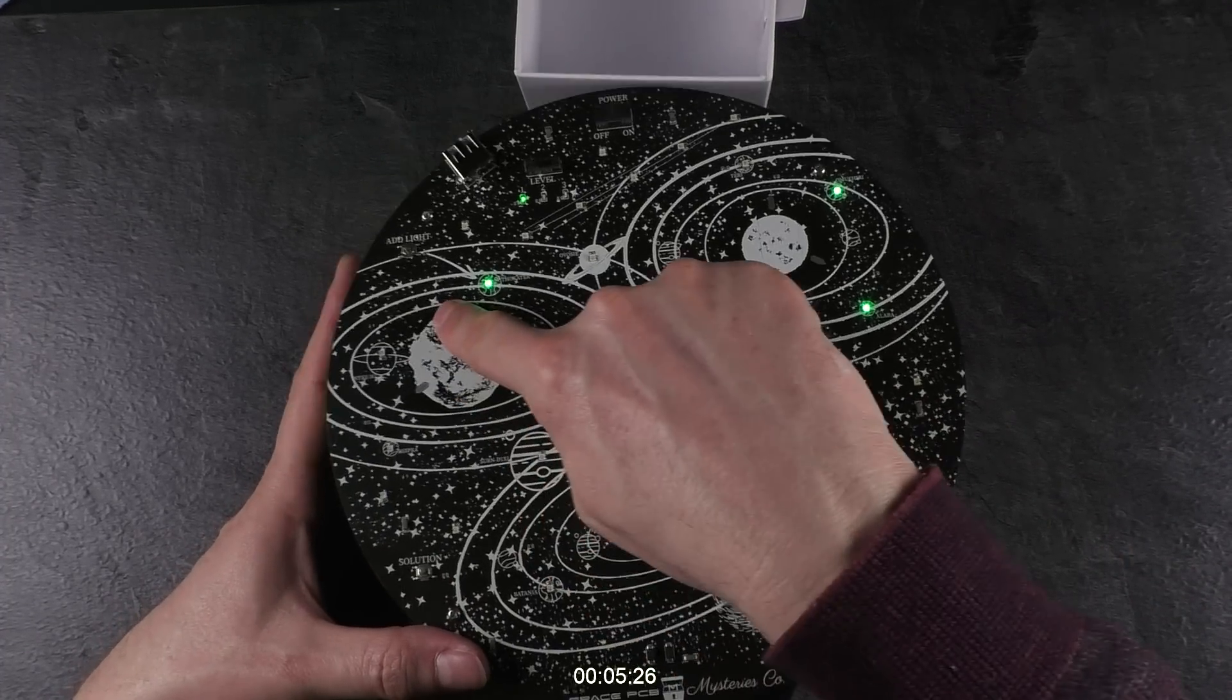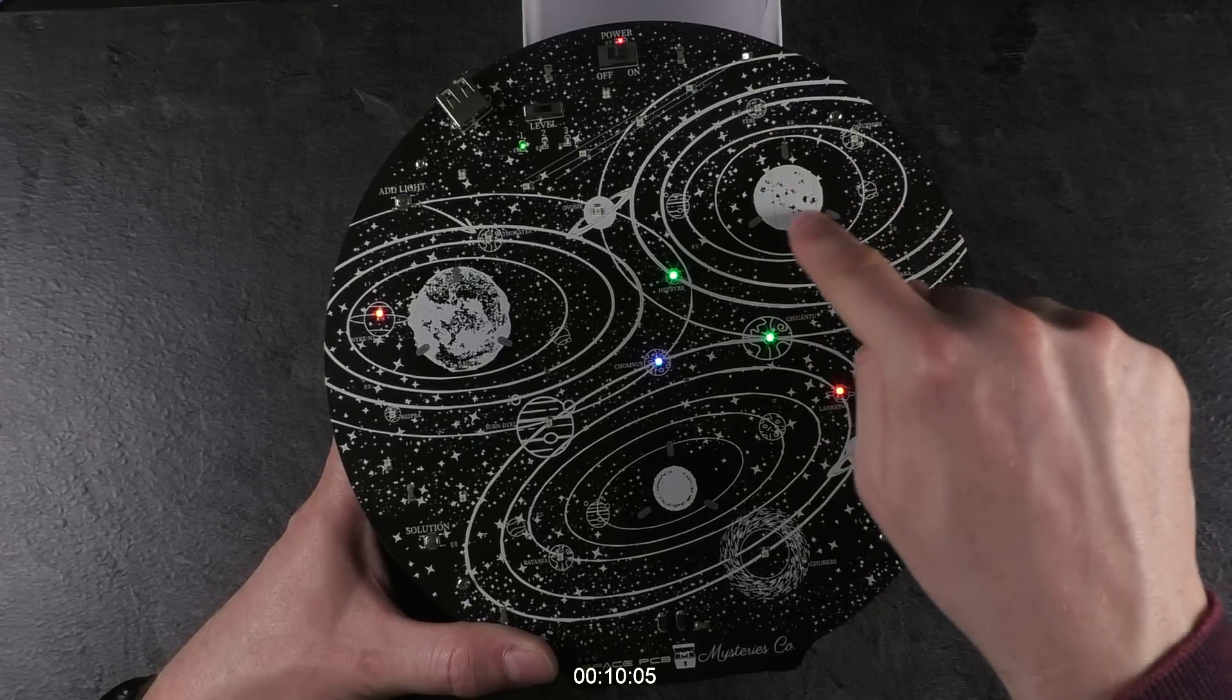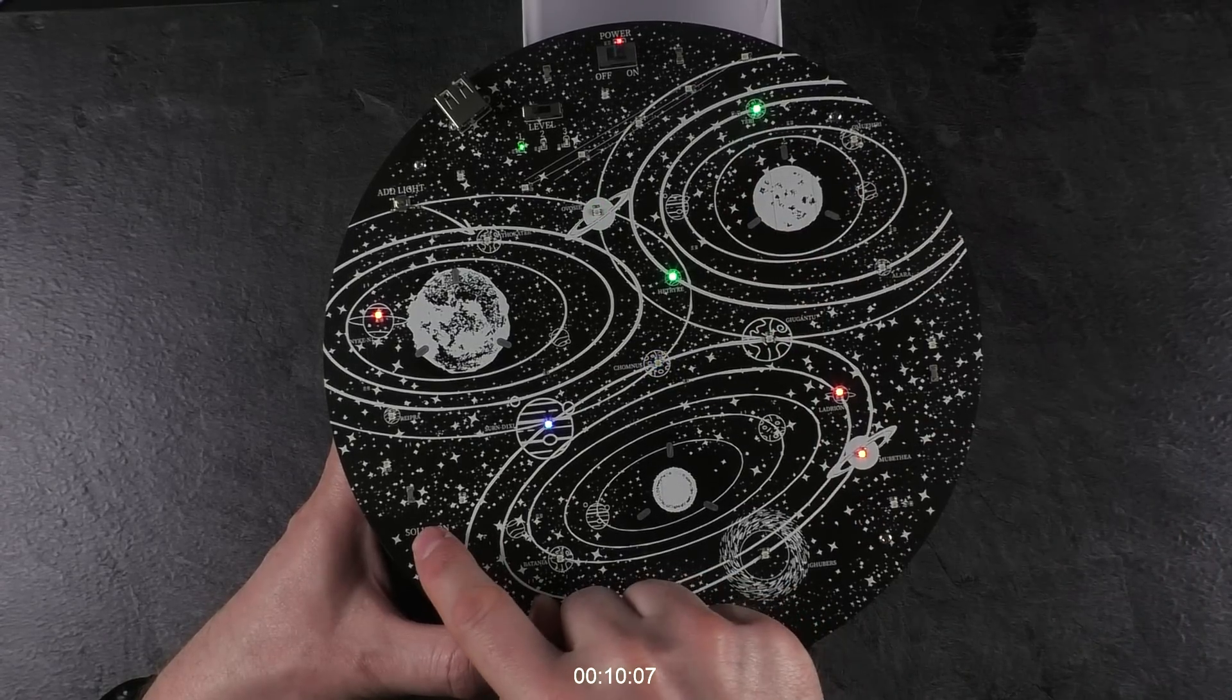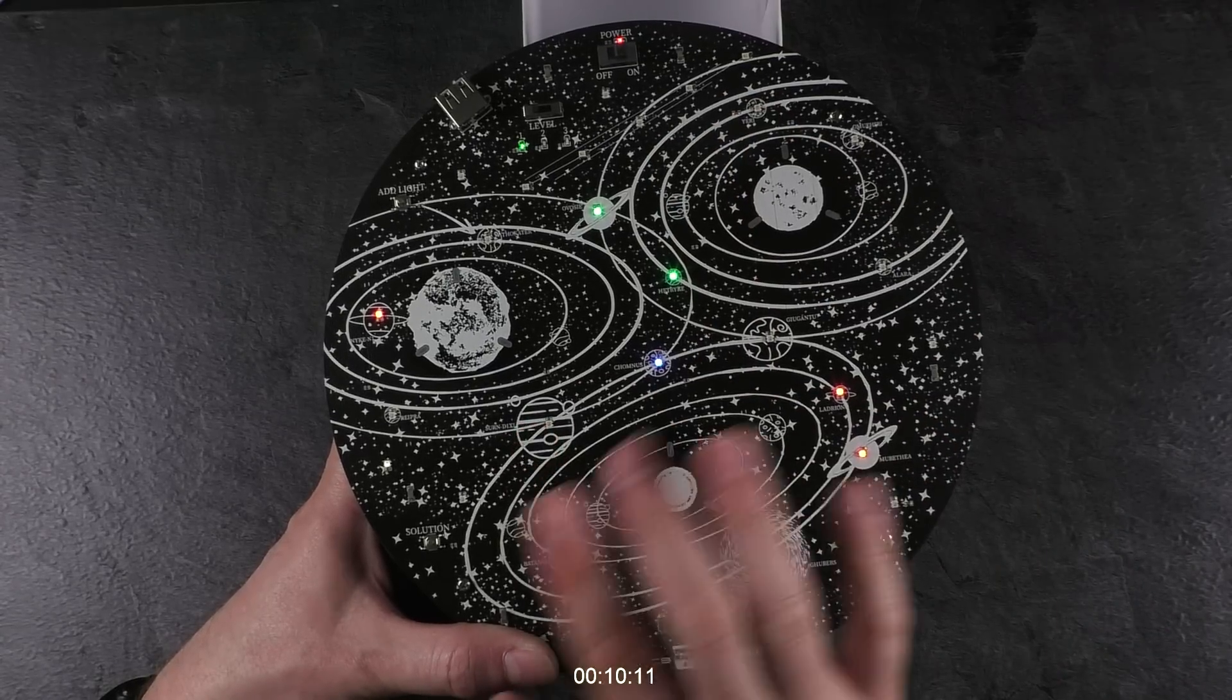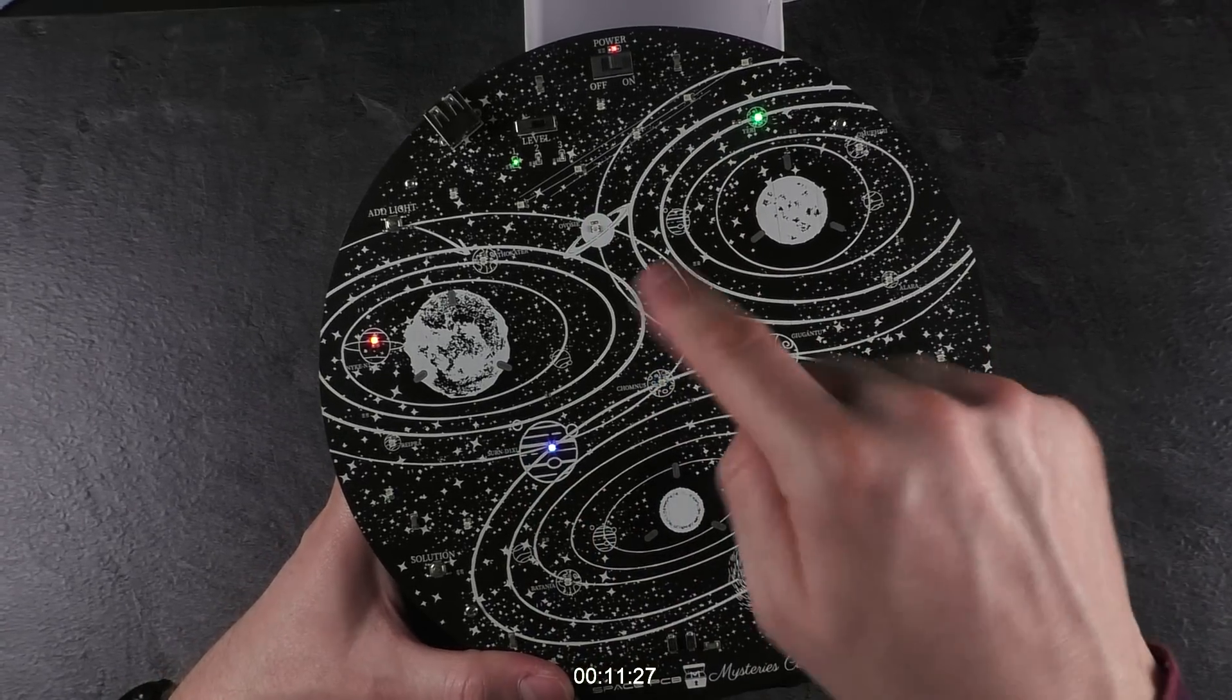So basically one of the green ones need to be eliminated. Now I need a red one. Another green one. Oh no, wrong direction. No, I eliminated one of the red ones.